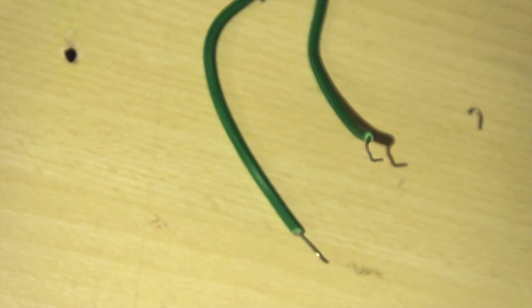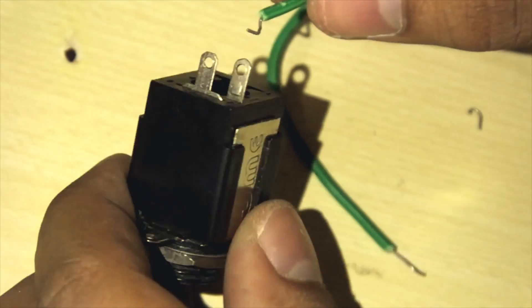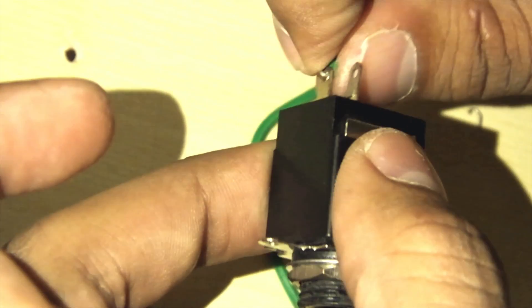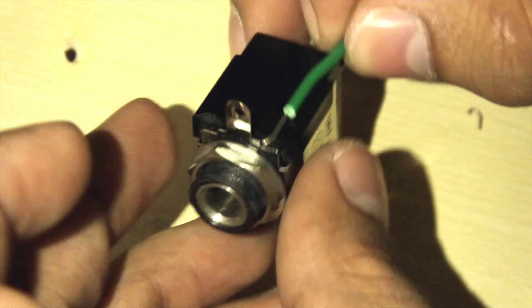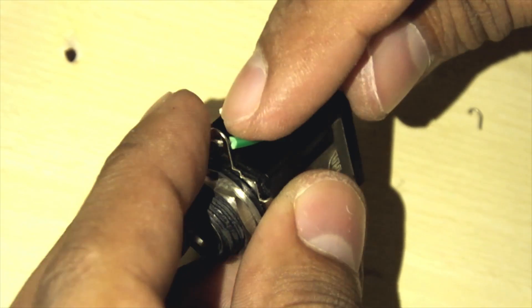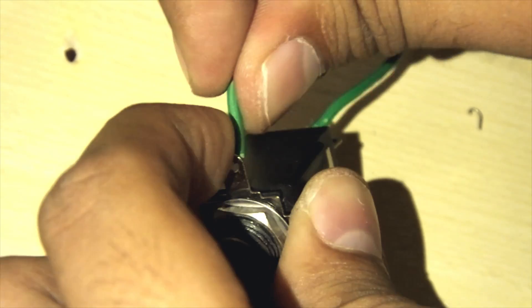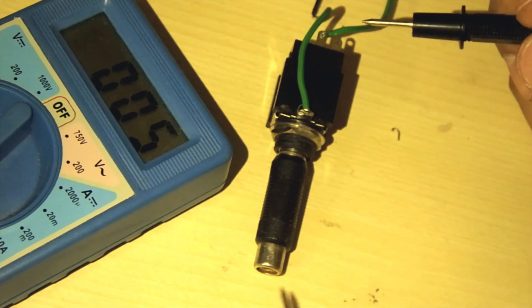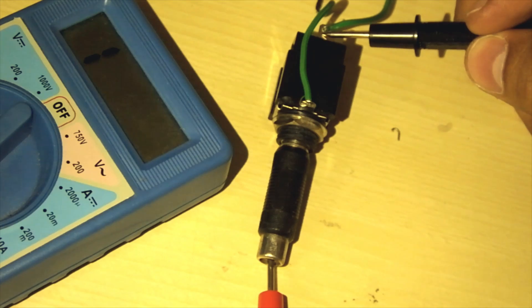Connect the other ends of the thicker wire to the pins of the 6.5mm socket. Check continuity on a multimeter to ensure you've connected the right pins. Now solder all these connections.